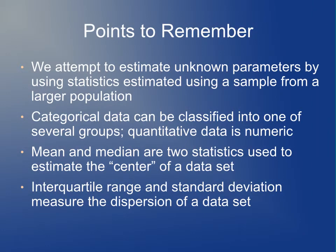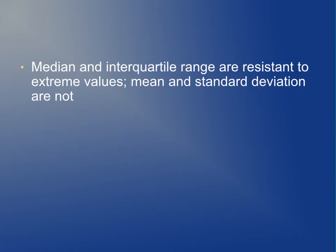Things to remember from today's lecture: you can attempt to estimate unknown parameters using statistics that are based on a sample from a larger population. We also make the distinction between categorical and quantitative data, and there's various types of categorical data. Mean and median are used to estimate the center of a data set in a certain sense. Interquartile range and standard deviation measure the amount of dispersion in a data set. Median and interquartile range are resistant to extreme values, whereas mean and standard deviation are not.